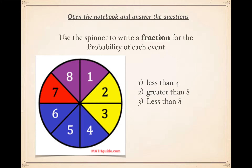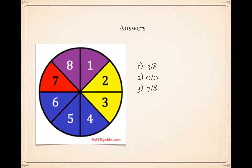Next question: use the spinner to write a fraction for the probability of each event. Remember, a fraction is one number written over another with a line in the middle. First question: less than four. Second question: greater than eight. Third question: less than eight. Look at the spinner on the left and answer these in your notebook. Pause the video if you need more time — the next slide will show the answers.